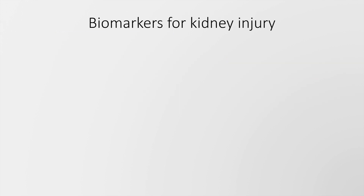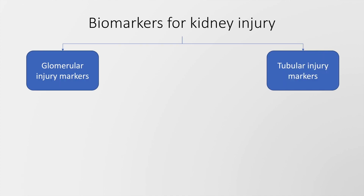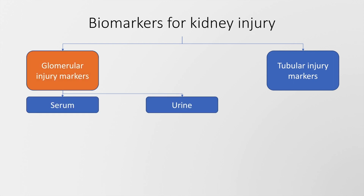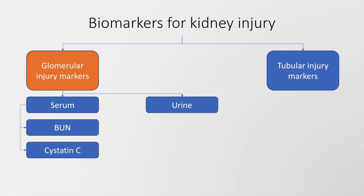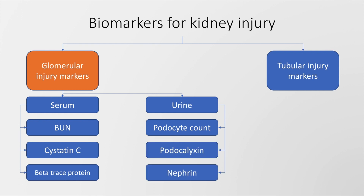The newest development in nephrology concerns biomarkers in acute kidney injury. These may be classified into glomerular injury markers or tubular injury markers. Glomerular injury markers may be further subclassified into those in the serum — including blood urea nitrogen, cystatin C, and beta-trace protein — and those in the urine, including podocyte count, podocalyxin, and nephrin.